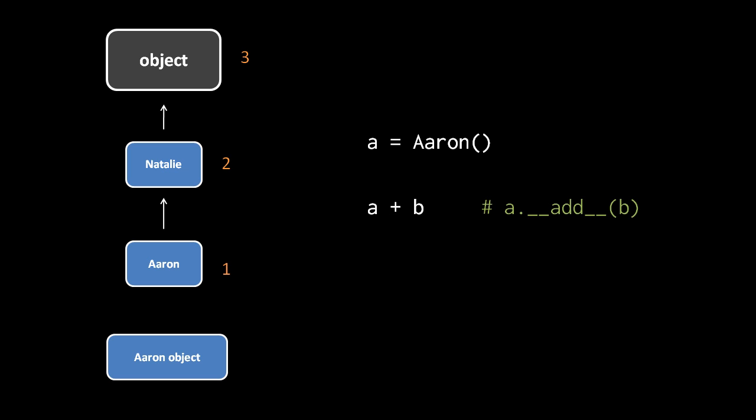However, when we use one of the operators which implicitly translates into a method call, the attribute search behavior slightly changes. So here, when we write a plus b, that's implicitly invoking a.__add__(b). So the attribute search for that __add__...